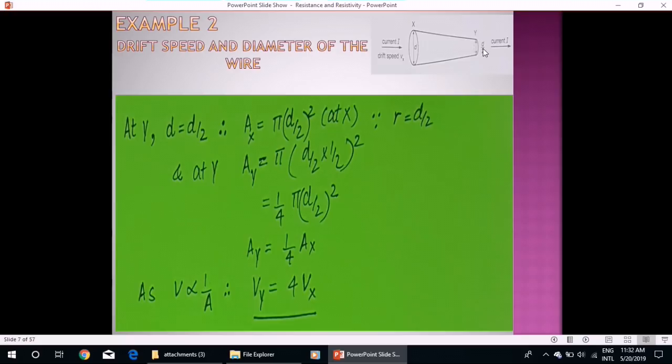Now as d is d by 2 at Y, so at Y we will write instead of pi d by 2 square, we will write pi d by 2 into half square, and it comes out to be one-fourth of area at X. So we know from the expression I is equal to A N V E that V will be inversely proportional to A. So velocity at Y point, or drift speed at Y point, will be equal to 4 times Vx.